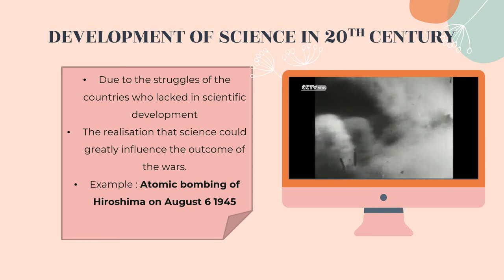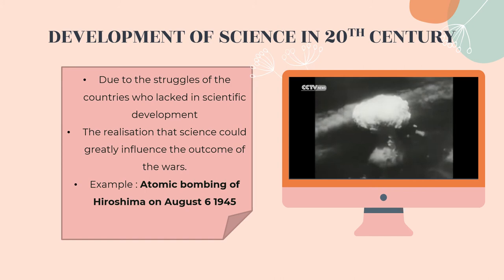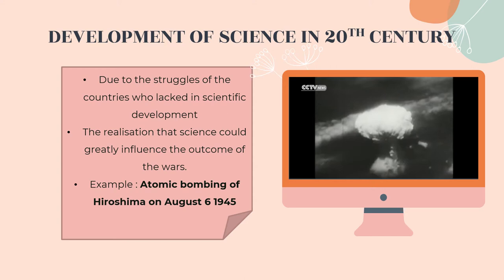I am sure all of you know the name Albert Einstein. He was the person who created the atomic bomb, which caused the atomic bombing of Hiroshima and Nagasaki. As you can see from the video of the atomic bombing of Hiroshima, it proved the outcome of the wars with the influence of science.